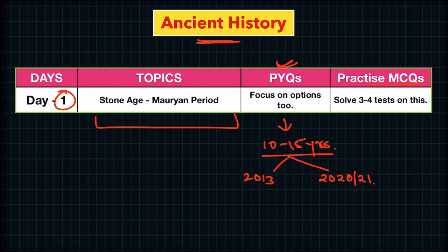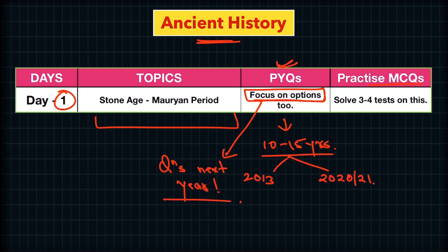Another important observation: in ancient, medieval, and art and culture questions, the options given are also important. You need full knowledge of all options, because in consecutive years, options that appeared in one year are asked as the main question the next year. So when doing PYQs for 10 to 15 years, focus on every option — all 4 of them. Then practice MCQs from at least 3 to 4 tests, targeting a total of 150 questions in ancient history, and the same for medieval history.